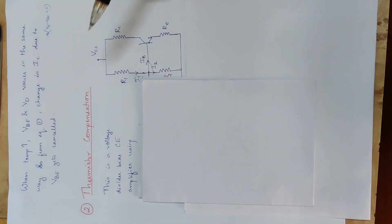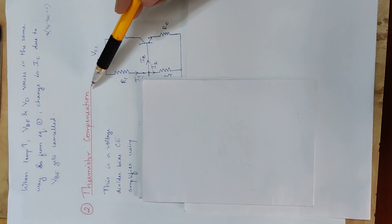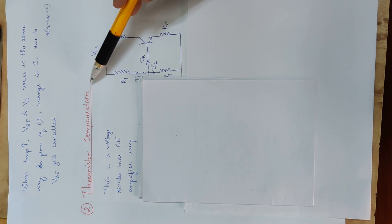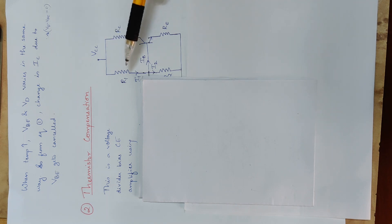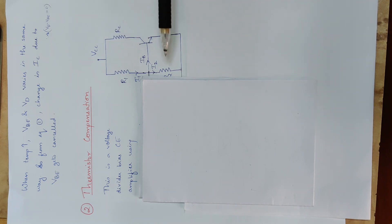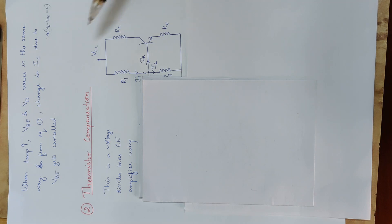For thermistor compensation, we use a voltage divider bias circuit. The circuit has VCC, R1, RC, R2, and RE — this is the voltage divider bias circuit.